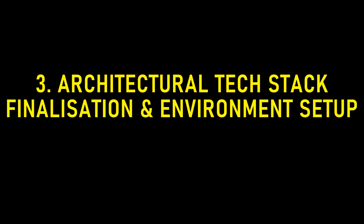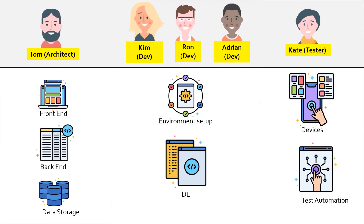Let's move on to the last item: architectural envisioning and tech stack finalization. The tech stack is finalized by the solution architect. It consists of front-end technologies used to develop the interface that interacts with end users, and back end, which involves server hosting, databases, programming language, business logic, and so on. For this Android app, Tom selects Android UI for front end and Kotlin as the programming language. Developers Kim, Ron, and Adrian work on getting the environment set up with the help of the infrastructure team. Different environments are created for development, testing, pre-prod, and production.